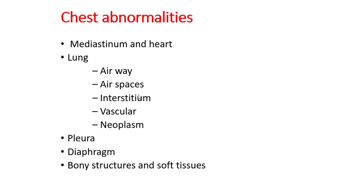Now the pathological conditions that can be detected by a chest X-ray: chest abnormalities include mediastinal and heart conditions, lung conditions, airway, airspace, interstitium, muscular disorders, lung neoplasm, pleural conditions, diaphragmatic abnormalities, and bony structure and soft tissue abnormalities.